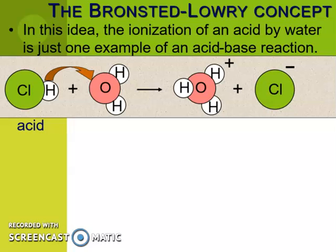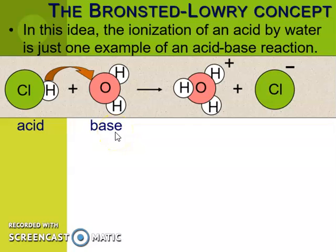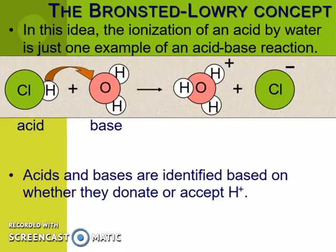Hydrochloric acid is an acid — in all acid-base reactions, an acid is going to react with a base. Water is amphoteric, meaning it can react as either an acid or a base. Since HCl is an acid, water will react as the base here. The hydronium ion H₃O⁺ on the right side is the acid product. Acids and bases are identified by whether they donate or accept the hydrogen ion.